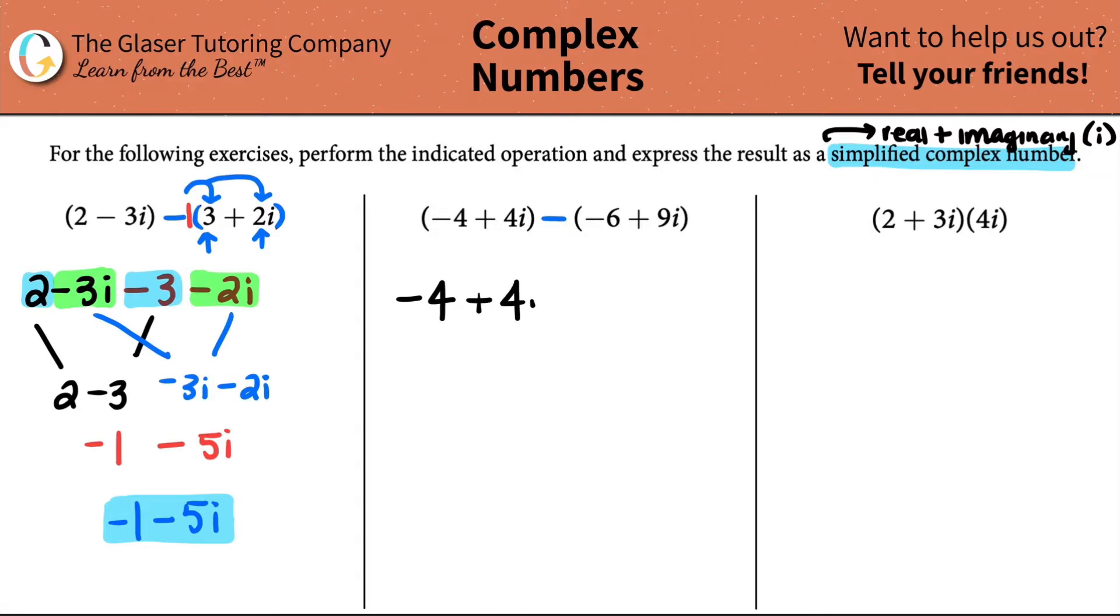The first thing I'm going to do is I'm going to try to get these out of the parentheses. So I don't have to do anything to the first ones: -4 + 4i. But now I'm subtracting. There is a secret one here. It's really a negative one times these guys. So you switch the signs in this parentheses. This would really be negative one times negative six is a plus six. The negative six turned into a positive six. And then negative one times nine i would be minus nine i.